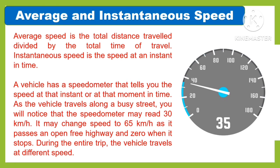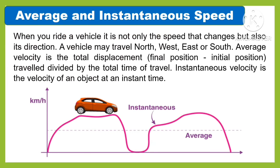The speedometer may change to 65 kilometers per hour as it passes an open free highway, and zero when it stops. During the entire trip, the vehicle travels at different speeds. When you ride a vehicle, it is not only the speed that changes, but also its direction. A vehicle may travel north, west, east, or south.